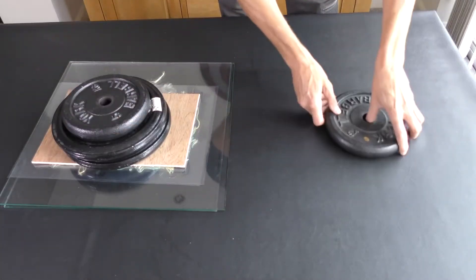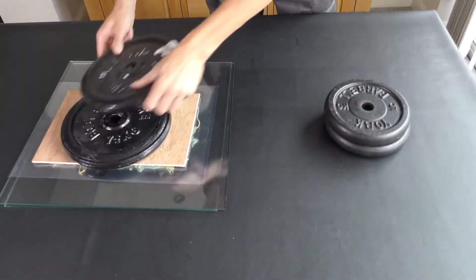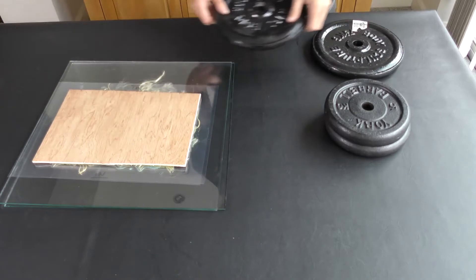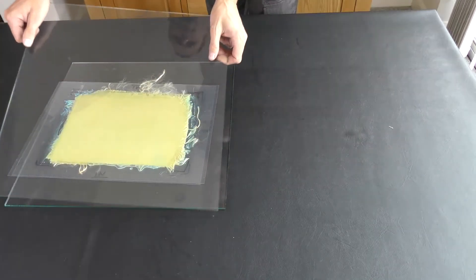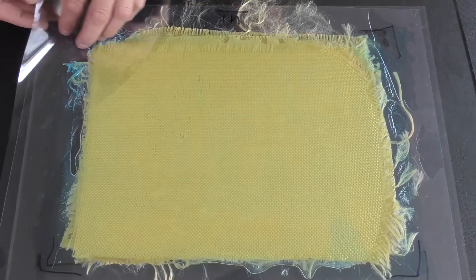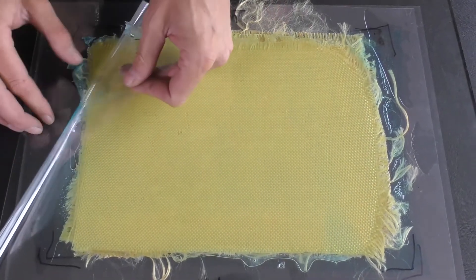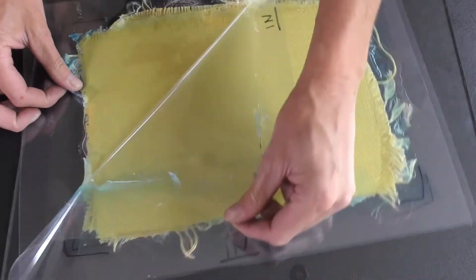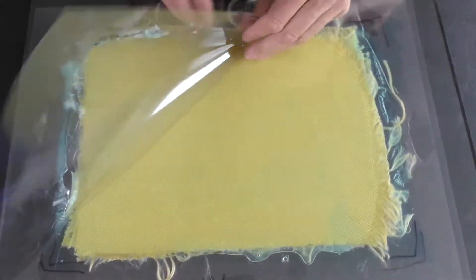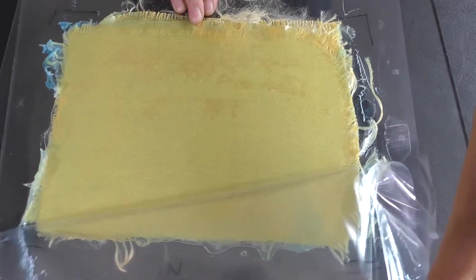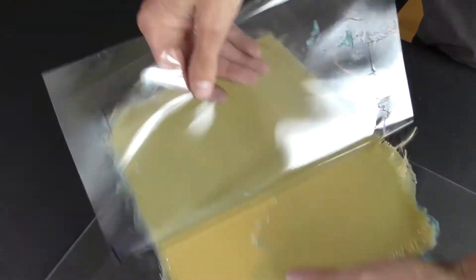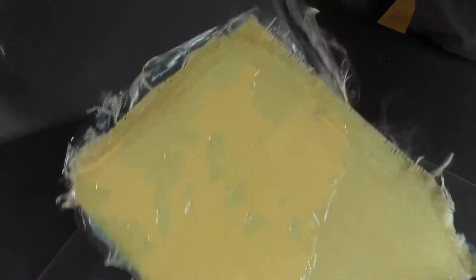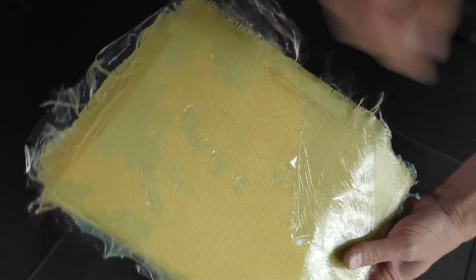Now all resins are different but a full cure with this epoxy will take between 12 to 24 hours so we'll have a sneak peek, go in early and take a look at this semi-cured state.